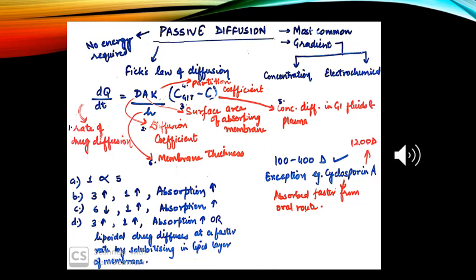The rate of diffusion is proportional to the concentration difference in GI fluids and plasma. As the surface area increases and partition coefficient increases, absorption increases. As the membrane thickness decreases, absorption again increases.